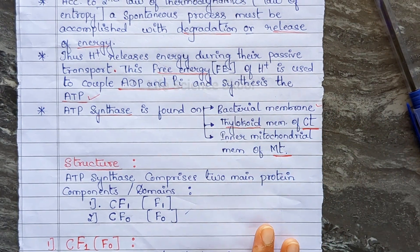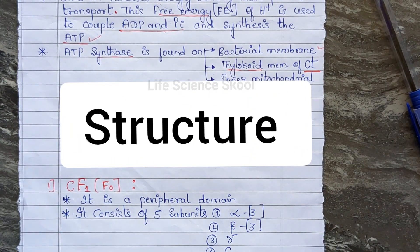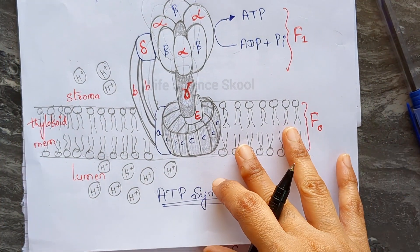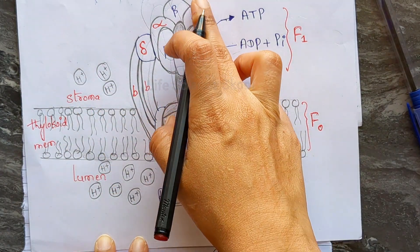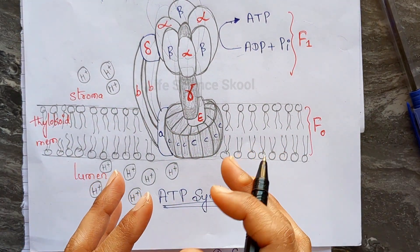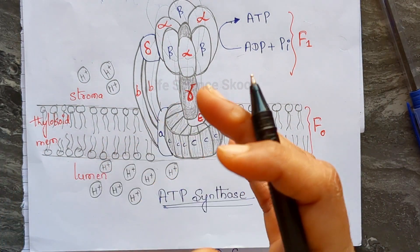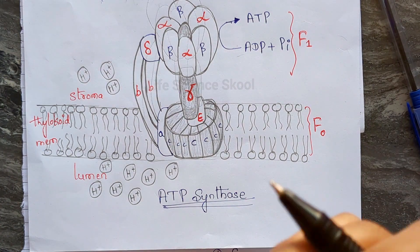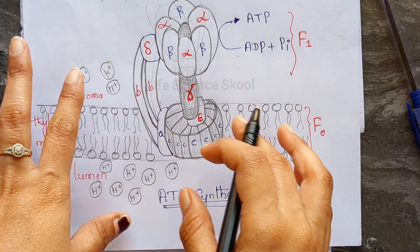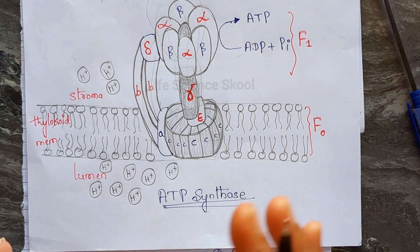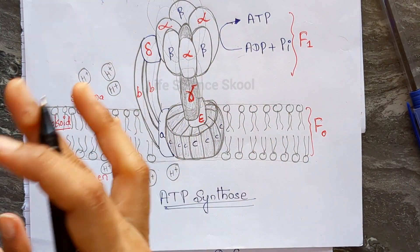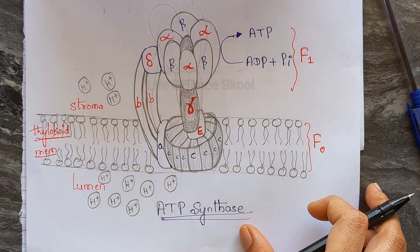Now we move to the structure of ATP synthase. Looking at the diagram I've drawn — it's a rough diagram to help understand the concept. ATP synthase comprises two main protein components or domains: CF1 (where C represents chloroplast; in mitochondria it's just F1) and CF0, also written as F-naught or Fo — note it is not 'F-zero', it is F-naught.